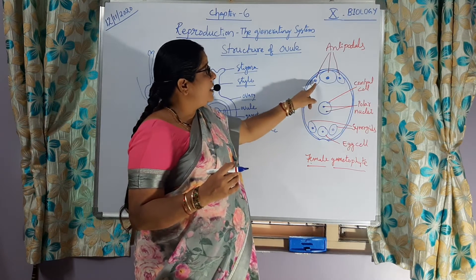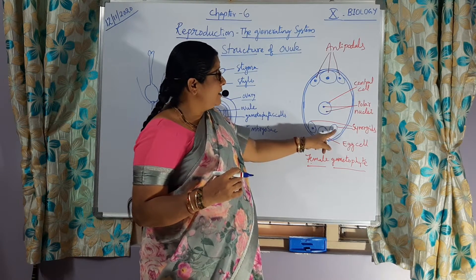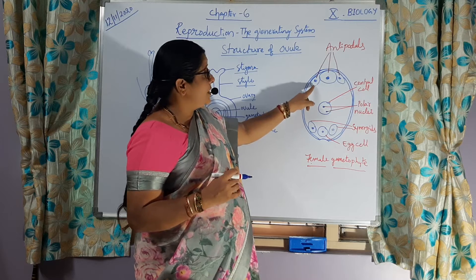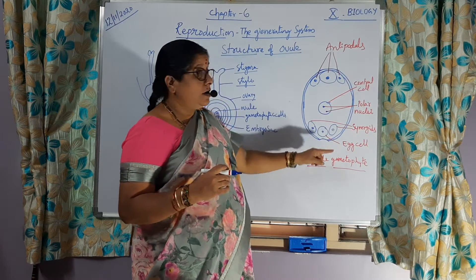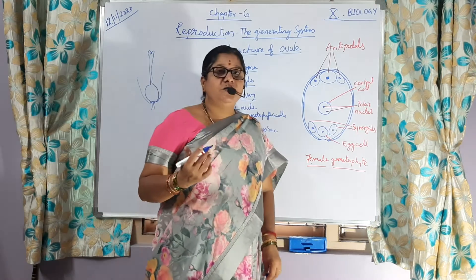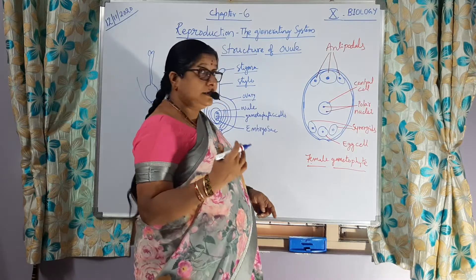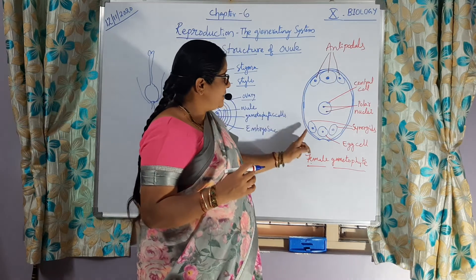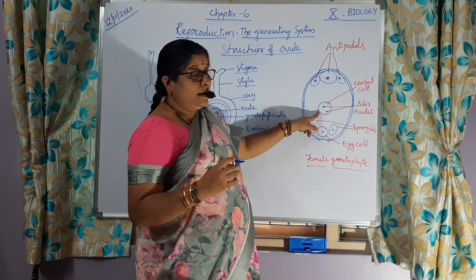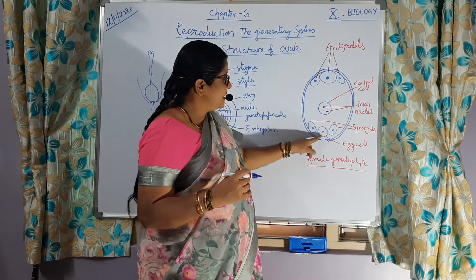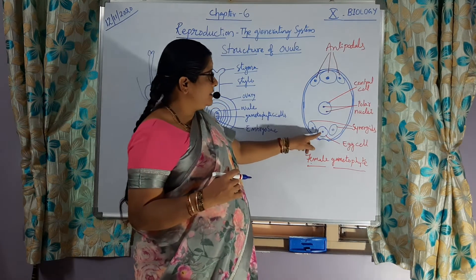Now, what is the function of antipodals and synergids? These antipodals and synergids are going to provide nourishment to the developing embryo after fertilization. They are going to provide nourishment. This egg cell and polar nuclei which are present in the central cell — the egg cell is present very much close to the thalamus region.